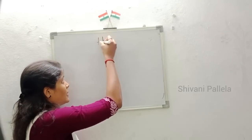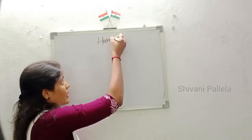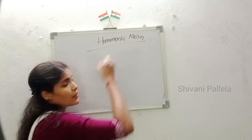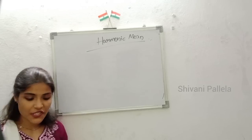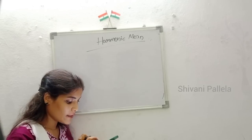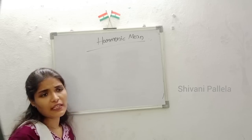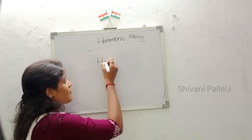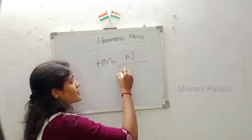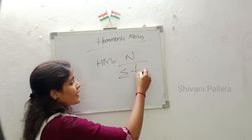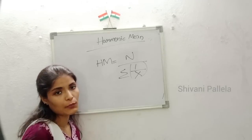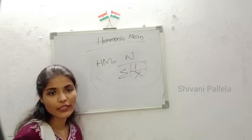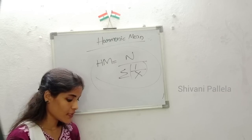Now we will discuss about harmonic mean. The formula for harmonic mean is: HM = n / Σ(1/x). This is the formula for harmonic mean. We will now calculate using this formula with a question.